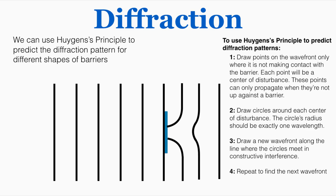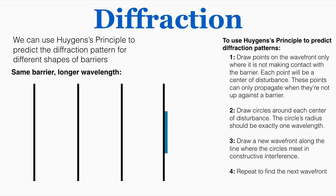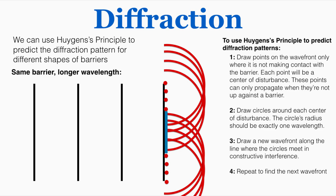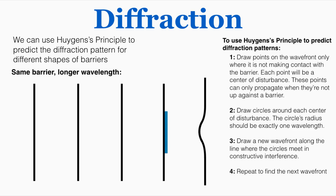The wave kind of returns to normal after a certain amount of distance. We can observe the same barrier but now with a longer wavelength, making bigger circles because the wavelength is longer. When we do that, this is the next line of the wavefront.